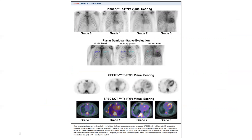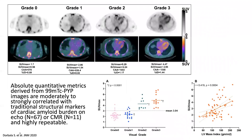The evaluation of SUV can discriminate foreground Perugini grades using absolute metrics. The variables from myocardial scintigraphy are closely correlated with traditional markers of amyloid burden, such as those provided by echocardiography and CMR. The combined use of SPECT and CT greatly increases sensitivity in the evaluation of myocardial scintigraphy, especially in selected subpopulations of patients.